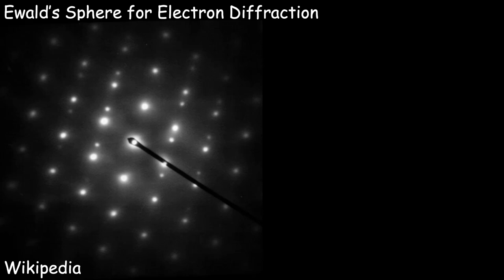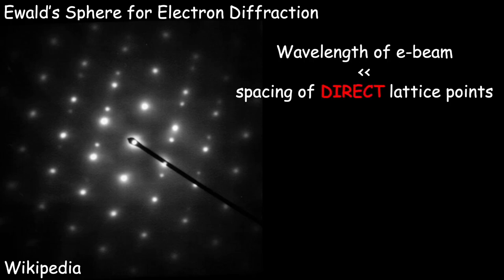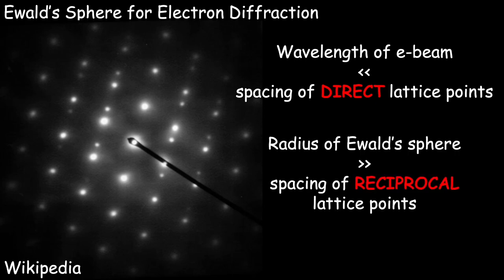Ewald's sphere construction has an interesting application in the interpretation and prediction of electron diffraction patterns. The wavelength of an electron beam is much smaller than the spacing of direct lattice points. This has a consequence in reciprocal space: the radius of Ewald's sphere is much much larger than the spacing of reciprocal lattice points.